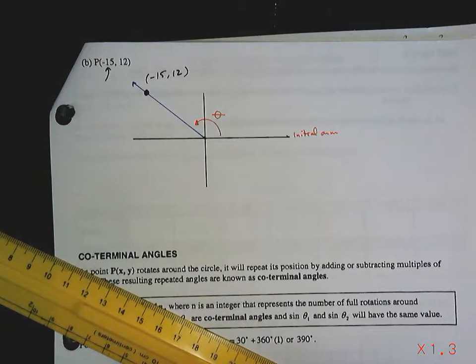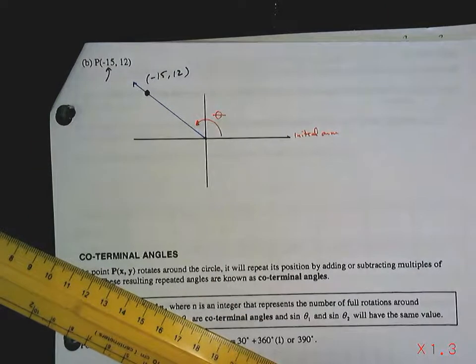That is the angle in standard position that we're looking for. Now in quadrant one, that angle was inside the triangle, which made life easy. In quadrant two it's not. It's outside the triangle.